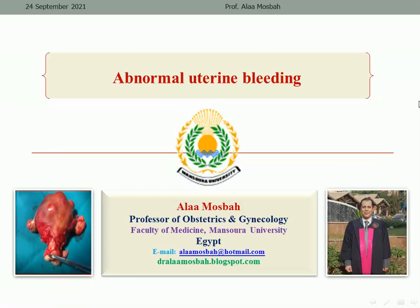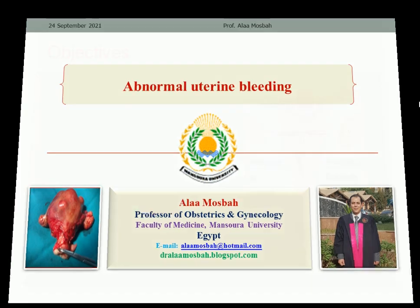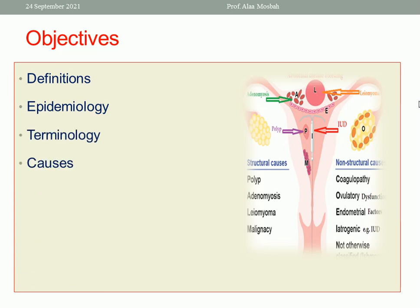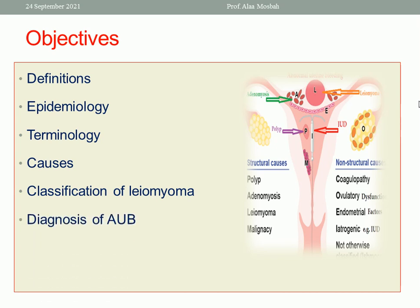Hello, my dear. I'm Dr. Alaa Musbah, Professor of Obstetrics and Gynecology, Faculty of Medicine at Mansour University. The topic of my lecture today is about abnormal uterine bleeding. Today we will discuss the definitions, epidemiology, terminology, causes, classification of leiomyoma, diagnosis of abnormal uterine bleeding, differential diagnosis, and lastly the treatment.